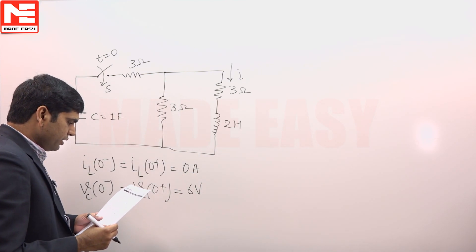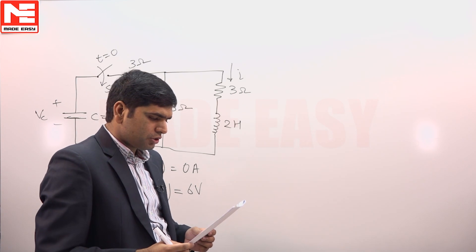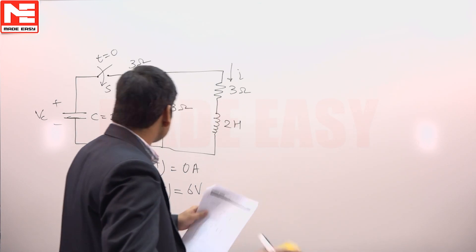Now we need to calculate: if the switch is closed at t equals 0, then the value of di/dt at t equals 0+.